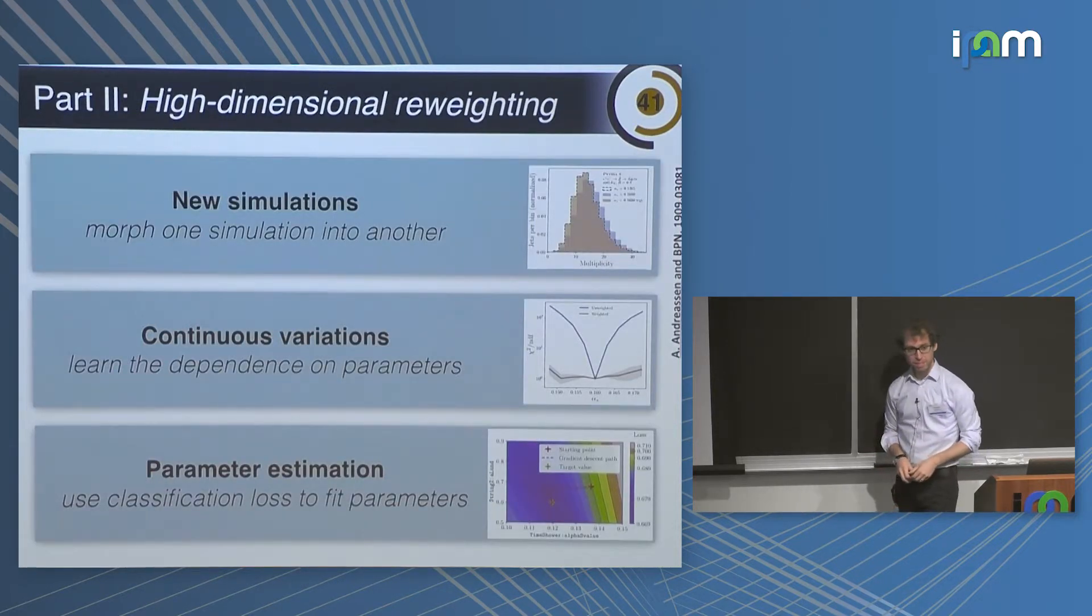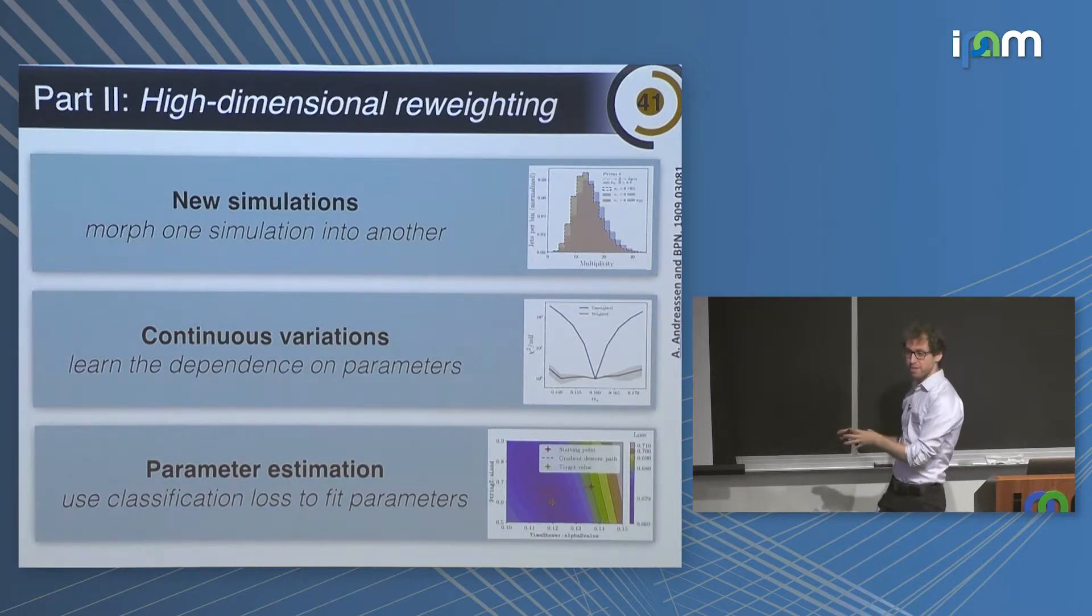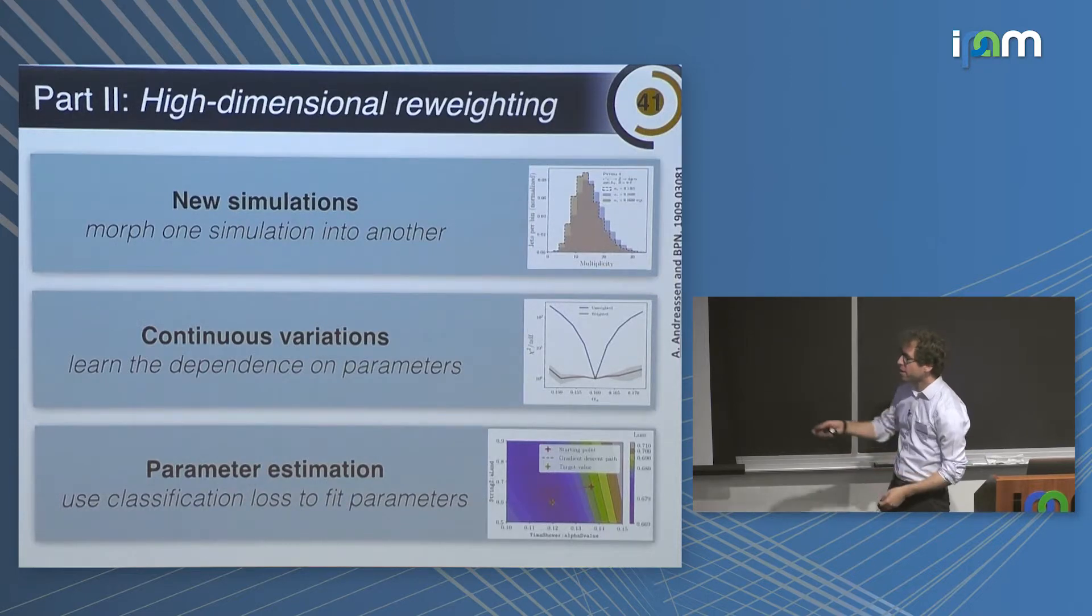And so what I want to talk about now is something completely different, which is high dimensional reweighting. In the GAN case, it's ab initio. The idea is that I want to generate an image from noise. But imagine I actually wanted to take advantage of a big database of existing simulations. How can I use those to generate some new simulation? That's what I'll talk about here. And I'm going to talk about three applications. One is if I want to make a new simulation from another, so morphing.